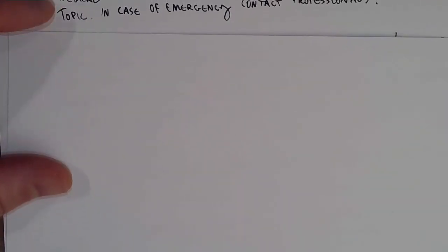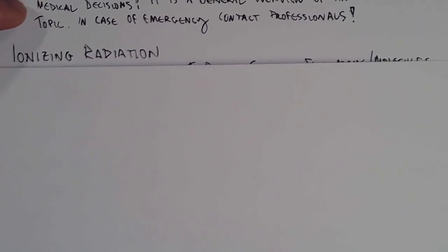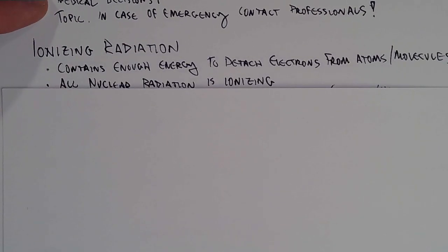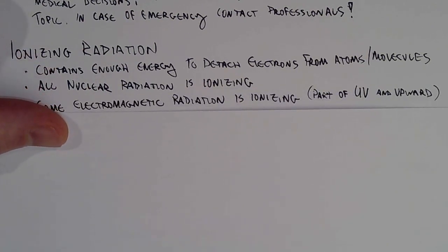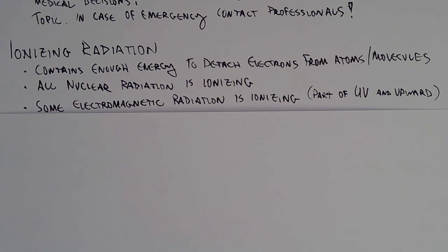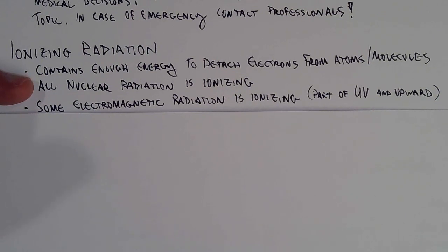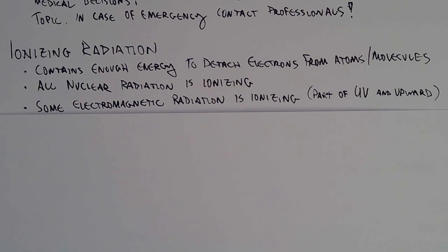Let's review ionizing radiation. Ionizing radiation is radiation that has enough energy to detach electrons from atoms or molecules. Comparing electromagnetic radiation and nuclear radiation: all nuclear radiation — alpha, beta, and gamma — is ionizing. Some electromagnetic radiation is ionizing, specifically starting in the ultraviolet and upward, which includes x-rays and gamma rays.